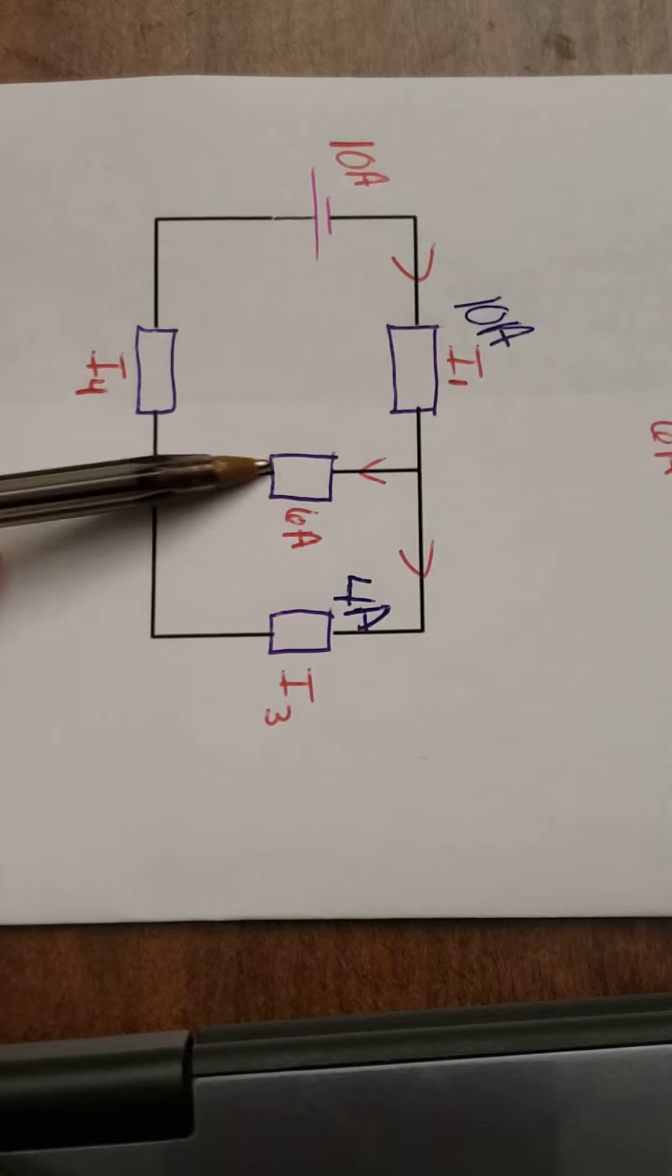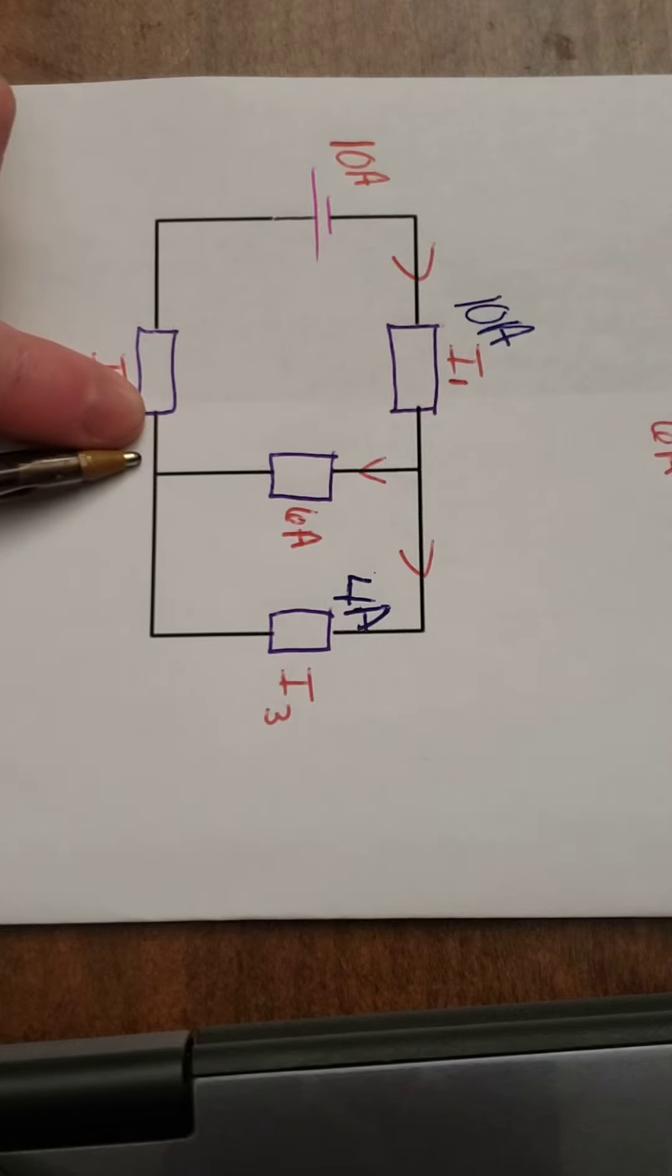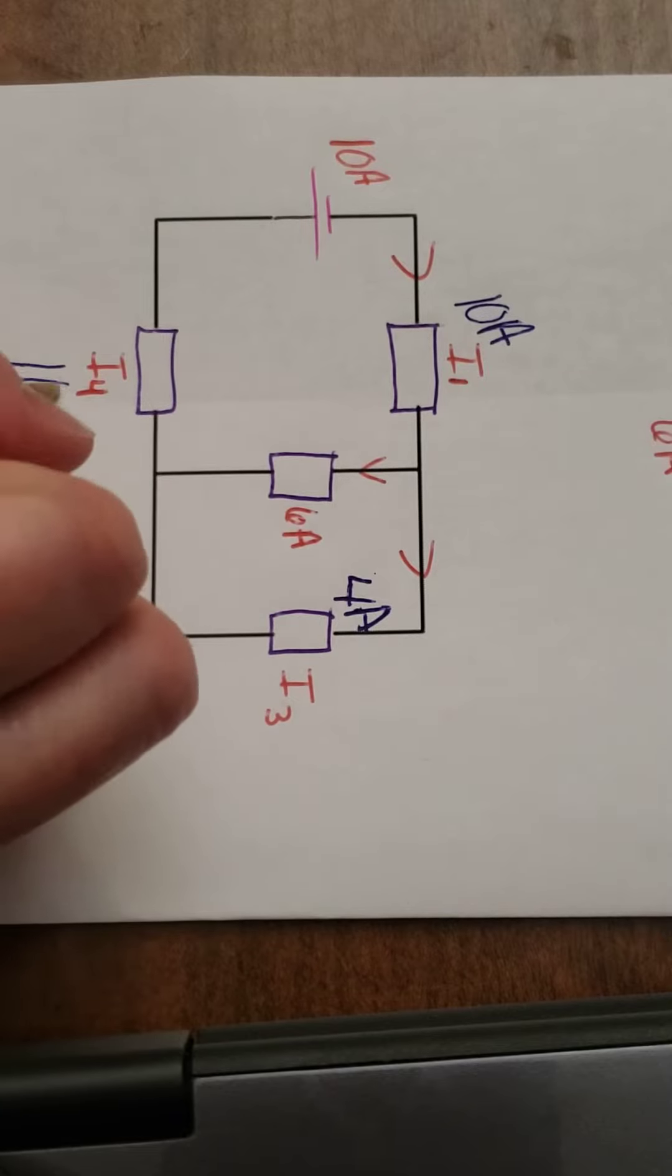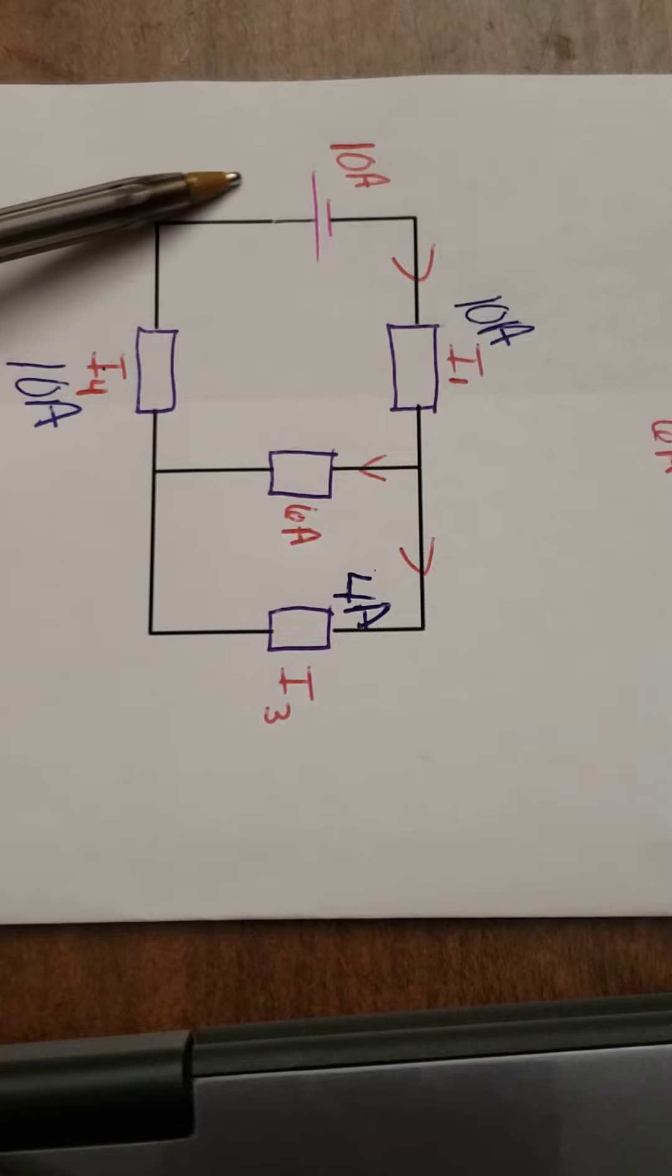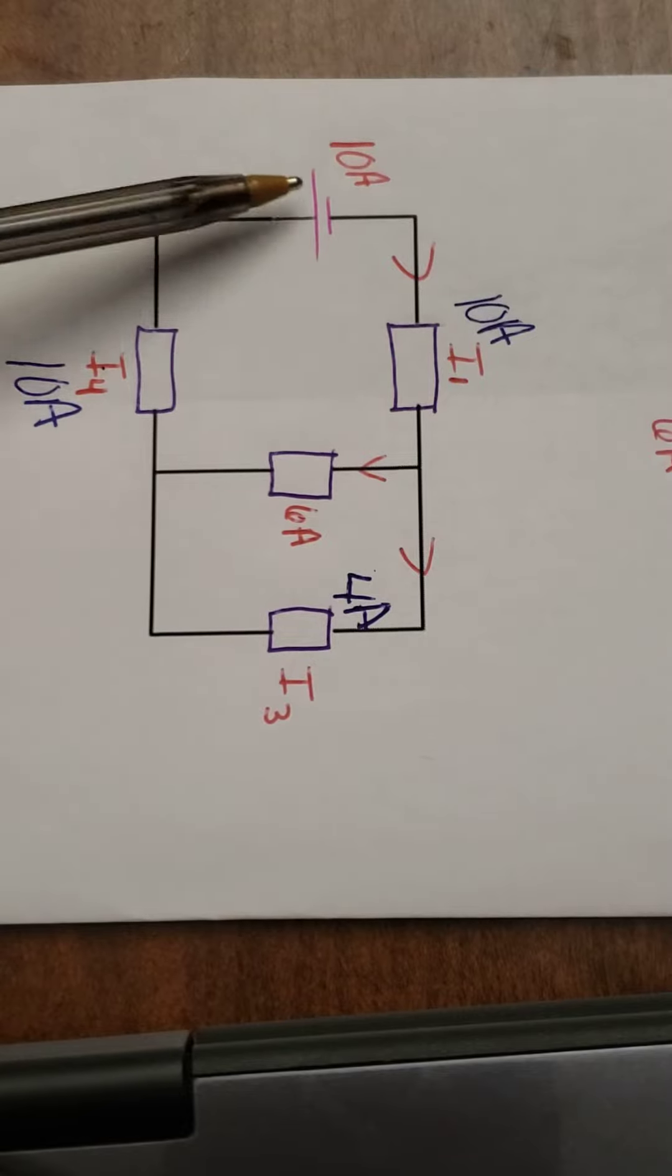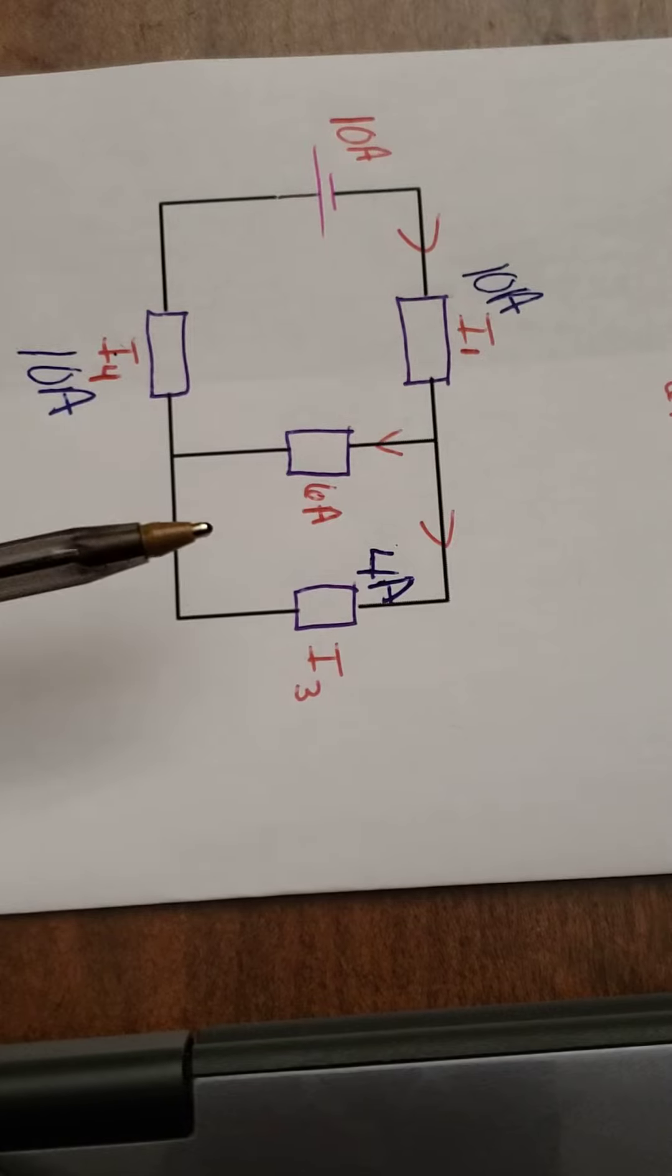When we get down here, so 6 are coming this way, 4 are coming this way, and they've reunited again. So 6 plus 4 is 10 amps. We're going through the fourth resistor and traveling through to the battery. So because this, this, and this are all in series, they're all the same.